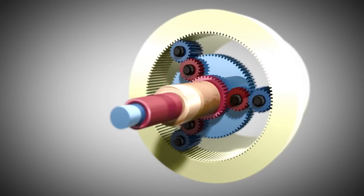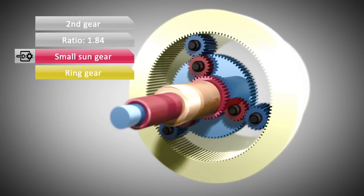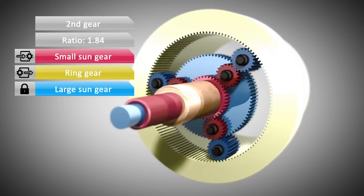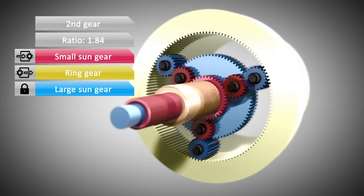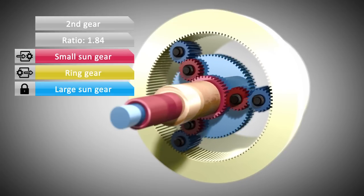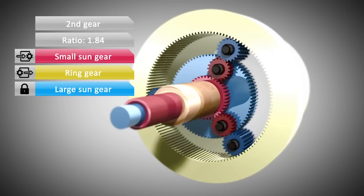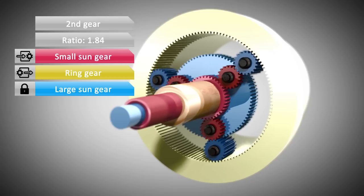In second gear, the planet carrier is no longer a fixed member of the system. Now it can rotate freely. However, the large sun is held stationary, so it cannot rotate. But once again, the small sun is the input of the system and drives the ring gear.